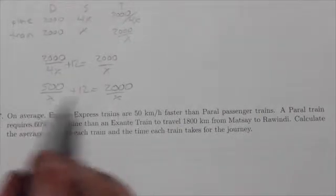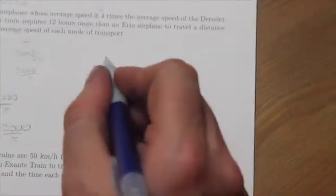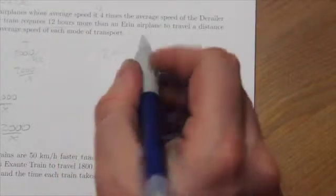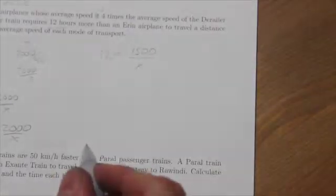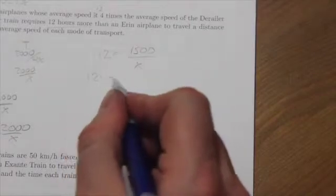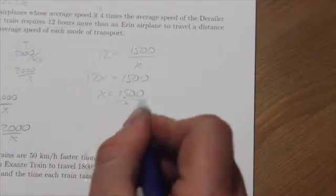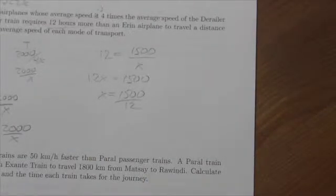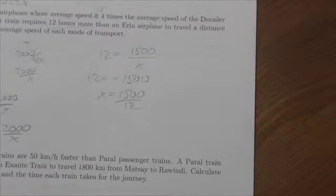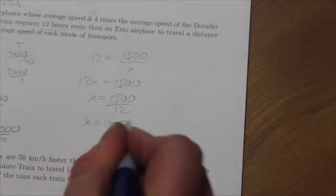I'll bring that 500 over x over to the right-hand side. So now this will become 12 equals 1,500 over x. Cross multiply and then divide. So 1,500 divided by 12. I'll do this on the calculator. Divide by 12. And I get that x equals 125.